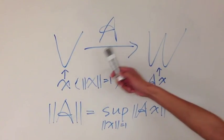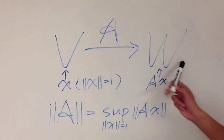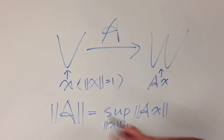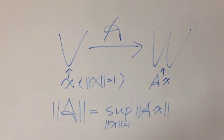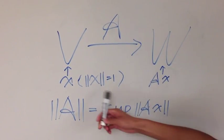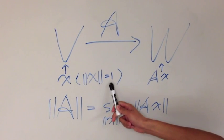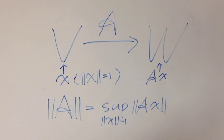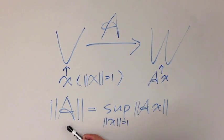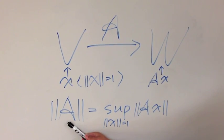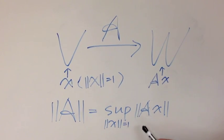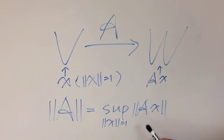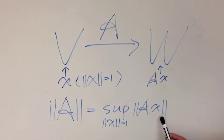Let A be a linear map from V to W, and let X be an element in V which has norm equal to 1. Then we define the induced norm of A as equal to the supremum of the norm of AX.